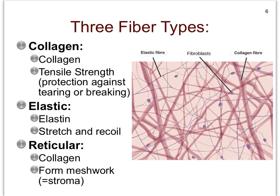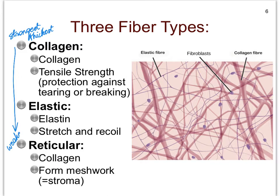Let's take a closer look now at the fibers. There are three kinds, even though on our picture we really only see two kinds. There are three types of fibers, and the way I have listed them here is from strongest to weakest — strongest and thickest to weakest and thinnest.